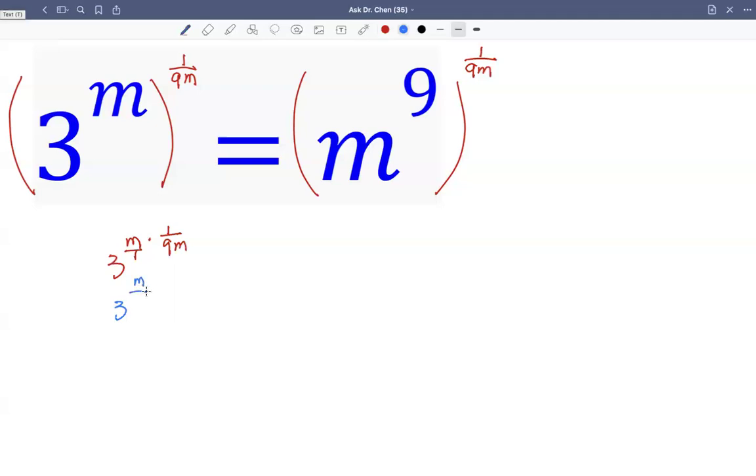I can write as 3 raised by m over m, raised by 1 over 9. Then of course, this something divided itself becomes 1. So that's 3 raised by 1 over 9, right? Now I have numbers on one side.